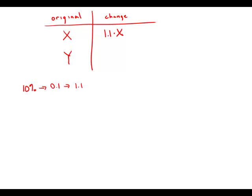To decrease Y by 10%, similar process — it's a decrease, so that's negative 10%, negative 0.1. Add 1 and we get 0.9, and this is the multiplier for a 10% decrease. So 0.9Y is a 10% decrease in Y.